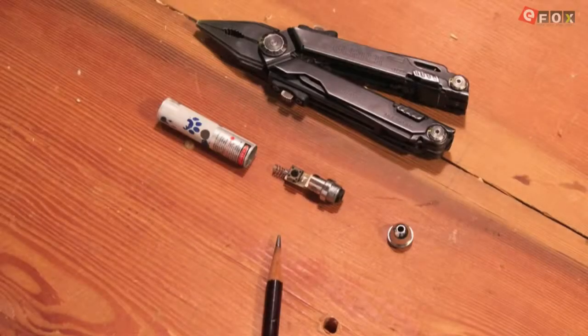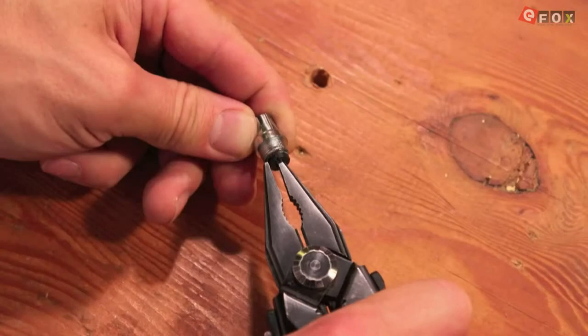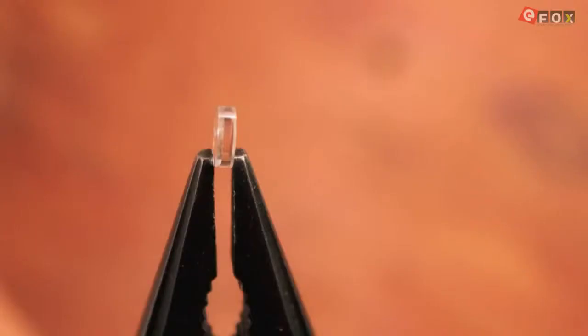Using the back end of a pencil, push the inner assembly out of the front of the housing. Unscrewing the plastic amp on the front of this assembly should free the lens.